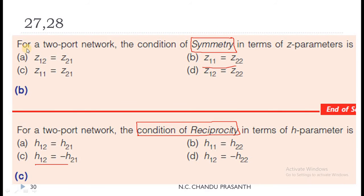Questions 27 and 28: For a two-port network, the condition of symmetry in terms of Z parameters is Z11 = Z22. Remember: Z11 = Z22 in terms of Z parameters is the condition of symmetry. Similarly, for a two-port network, the condition of reciprocity in terms of H parameters is H12 = −H21.